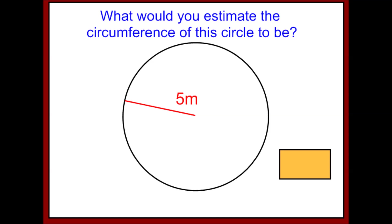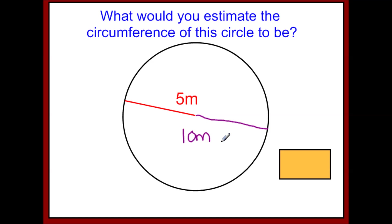Now this one's a little bit tricky — you have to be careful because we're given the radius, which is half of the diameter. So if you wanted to know the diameter, we would just double the radius. The diameter would be 10 meters, so a good estimate for the circumference would be 3 times 10, or 30 meters.